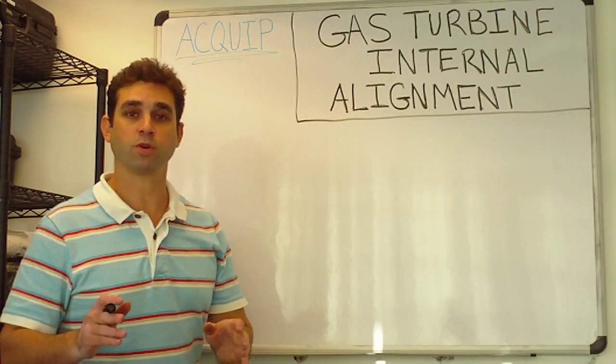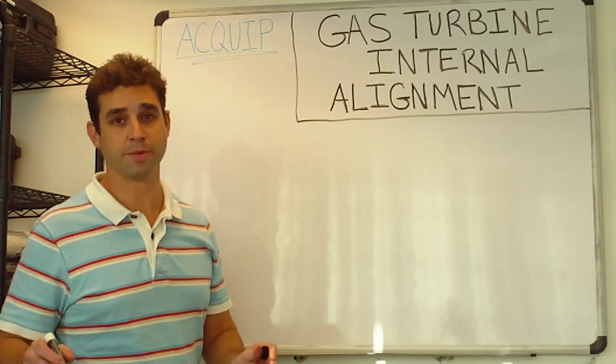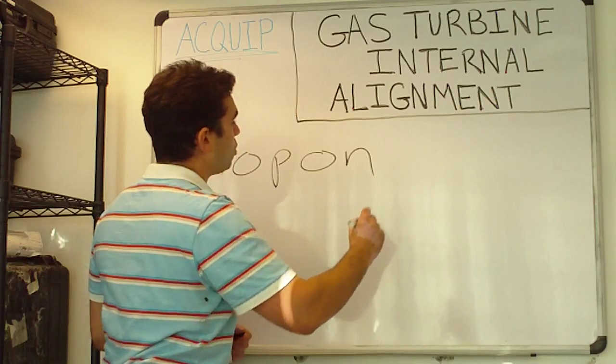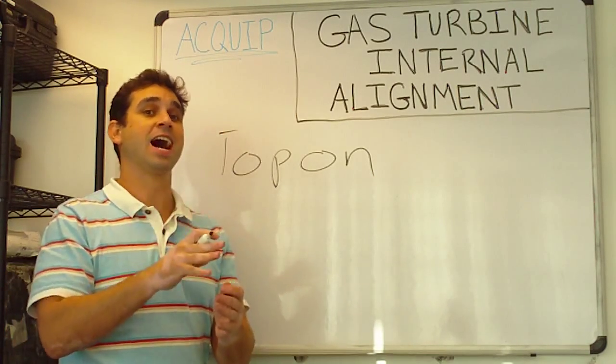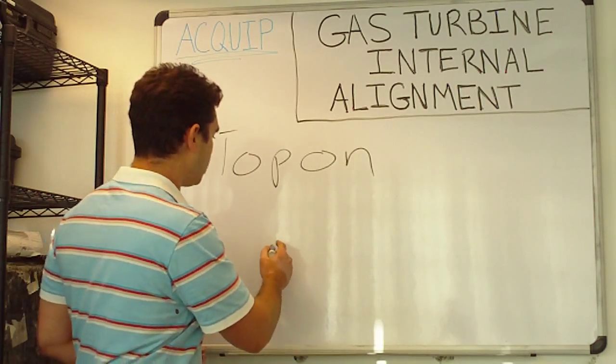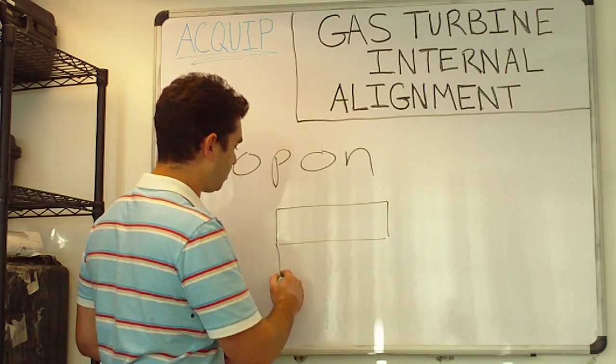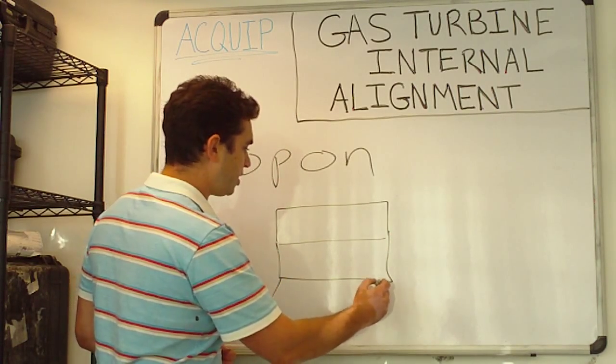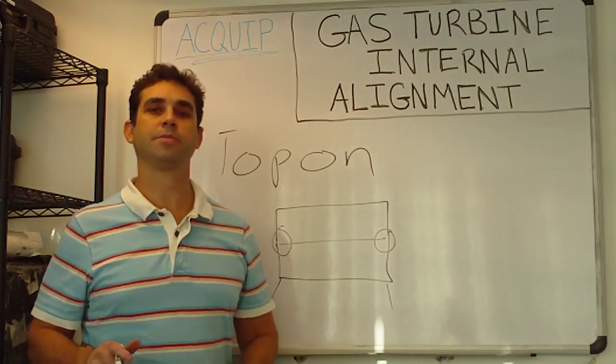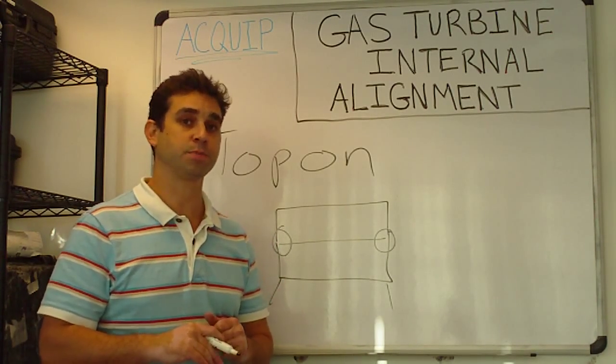The first thing that you have to remember when you do the gas turbine internal alignment is that you can only take the alignment readings with the top on. This is because in a gas turbine the top is a lot of support for the turbine. So by putting the top on you're creating the structure to mimic the online running of the turbine. And when we take our internal alignment readings we want the bores to be as close to its online running position as possible.